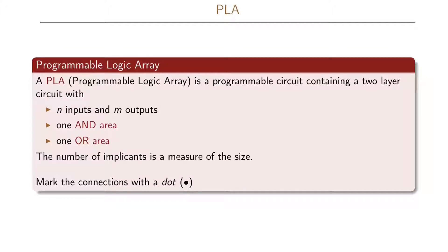The PLA consists of two layers, with N inputs and M outputs. The first layer is an AND area, while the second layer is an OR area. The PLA is configurable such that it can handle a set of implicants, and the number of implicants it can handle is a measure of the size of the PLA. We mark connections in our PLA with a dot, which tells us which inputs to use for our AND area and also which inputs to use for our OR area.